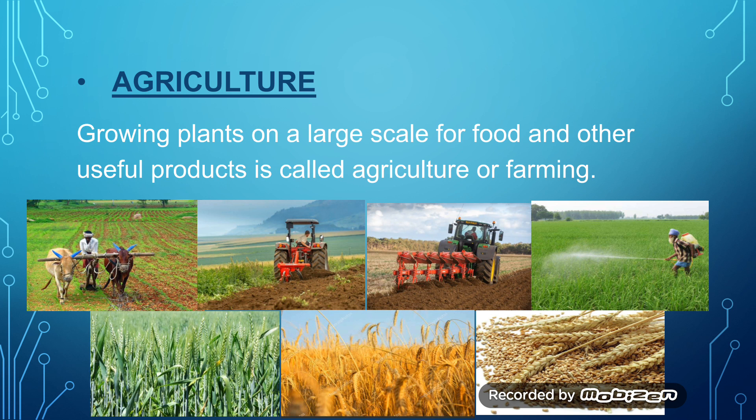Growing plants on a large scale for food and other useful products is called agriculture or farming. This is a process in which farmers grow crops. Crops are those plants that give us food and other useful products to fulfill our needs. Plants grow on a large scale in the field. Farmers grow different crops in their field on the basis of seasons, which we will study later.